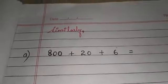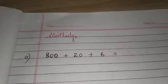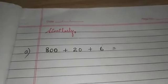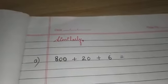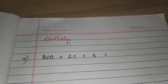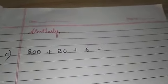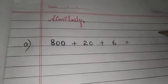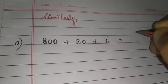Here you have 800 plus 20 plus 6. Very first thing, what you are going to do, since we are dealing with the place value of the number, write down the places of the number: ones, tens, and hundreds.